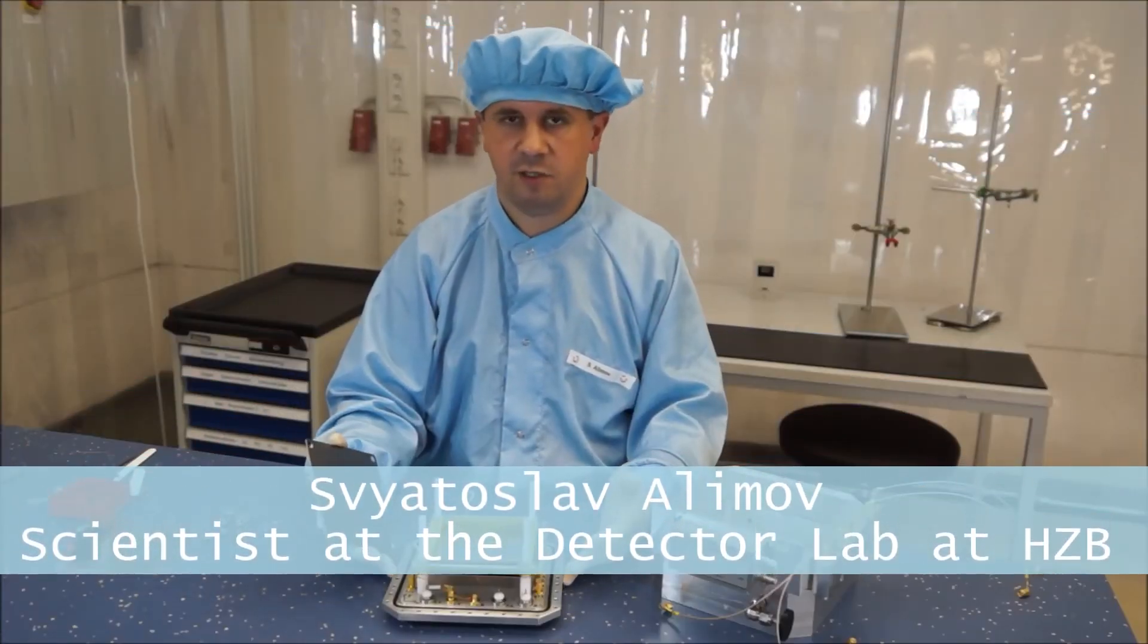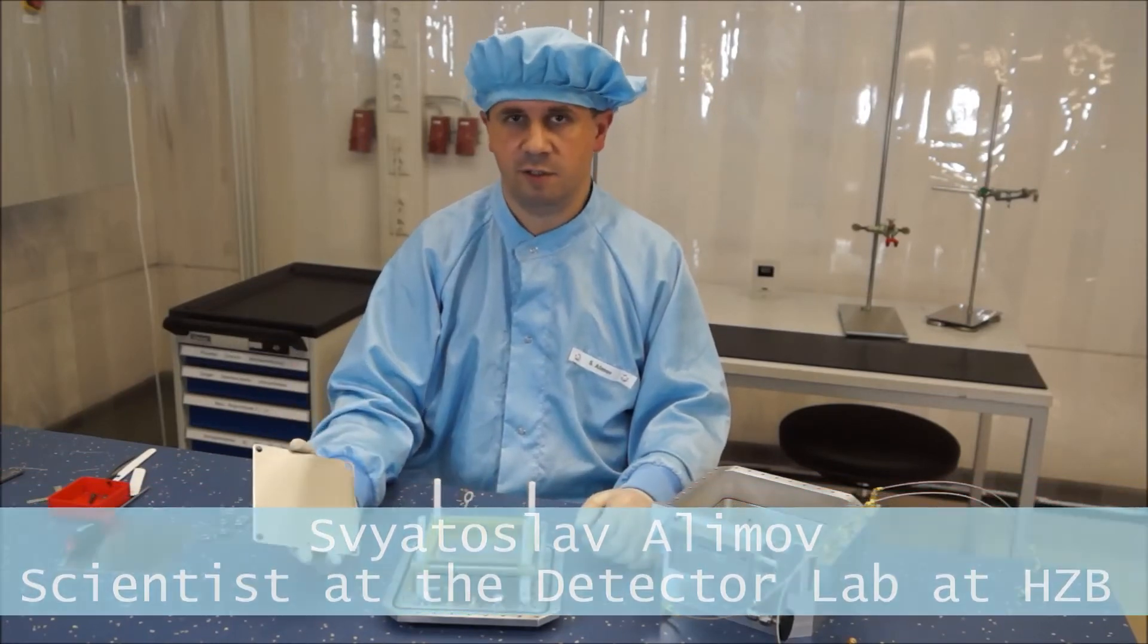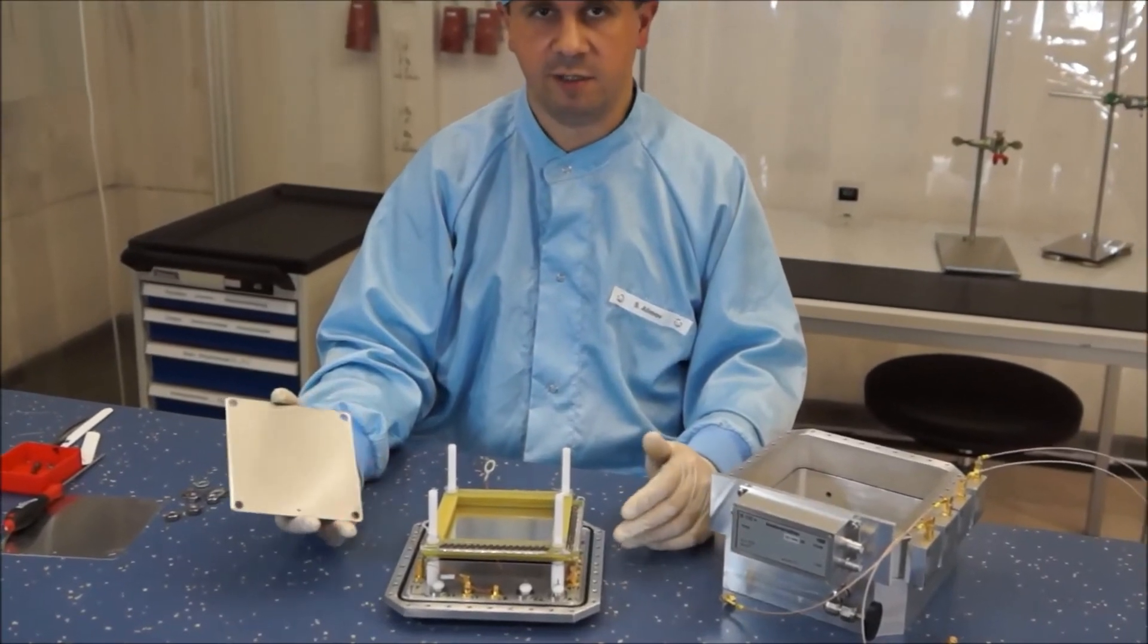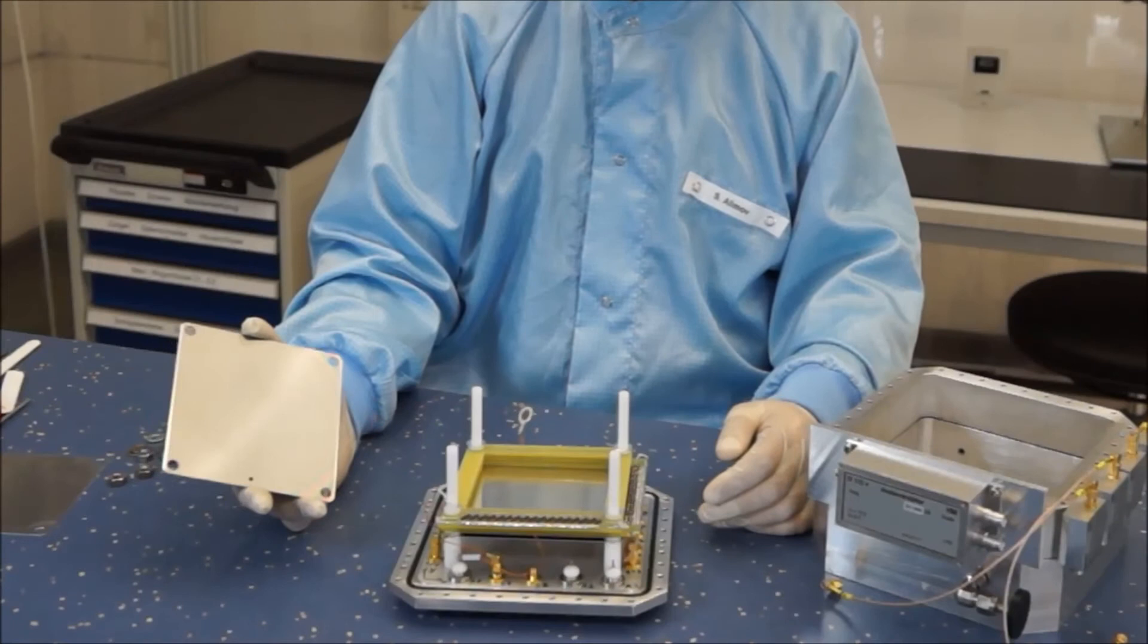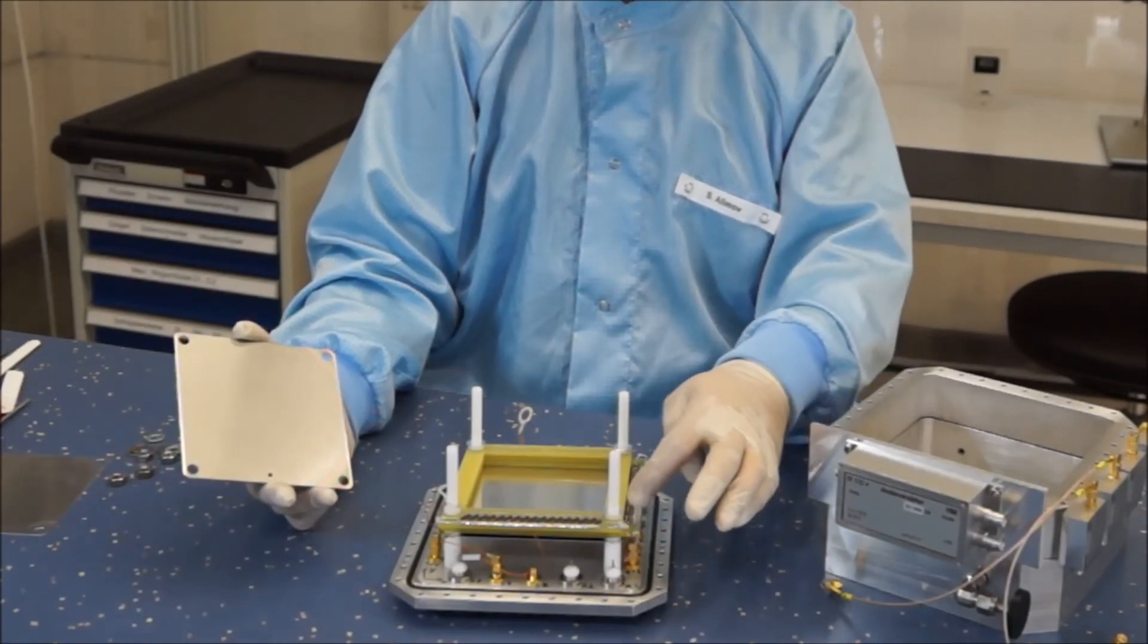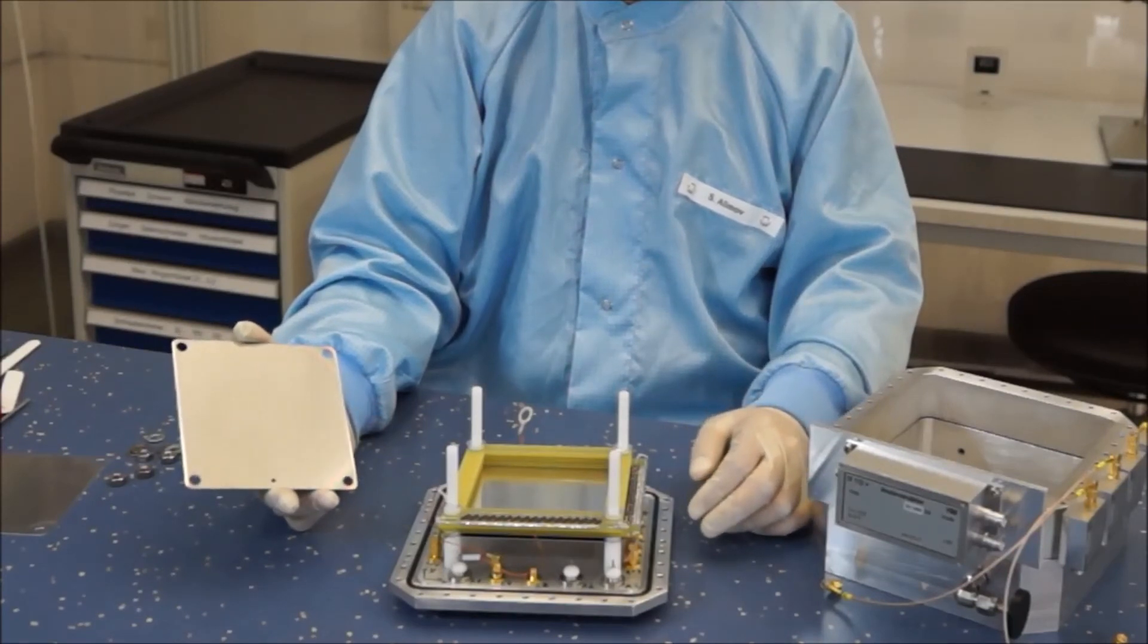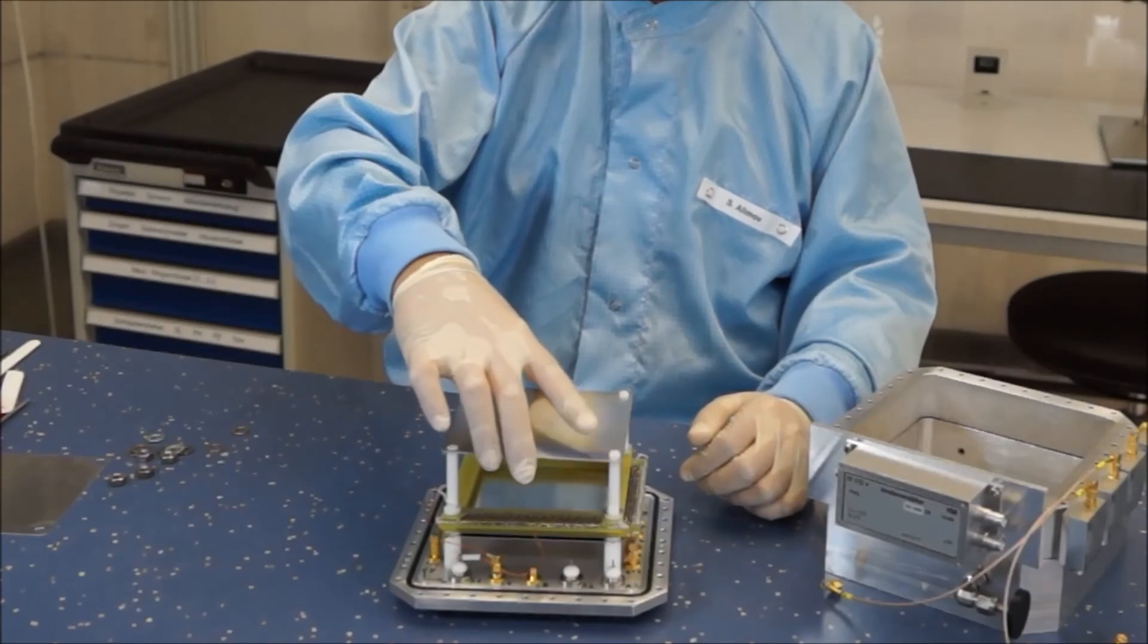And this detector is especially made for testing such boron-10 coated converters. Basically, it is a multi-wire proportional chamber. So we see here the sandwich consisting of the anode wire plane. On both sides of it, the cathodes equipped with the delay line chain, and on top of it comes the converter.